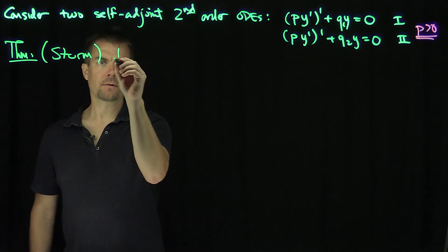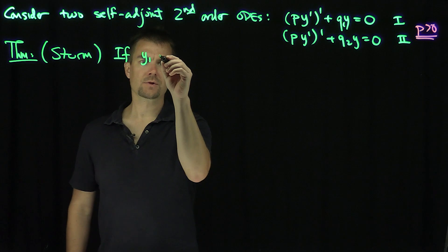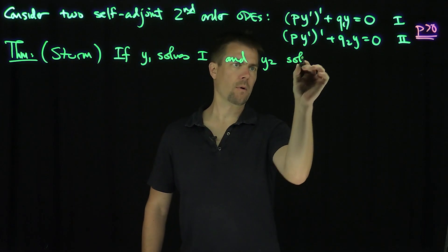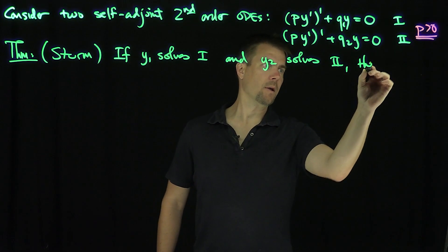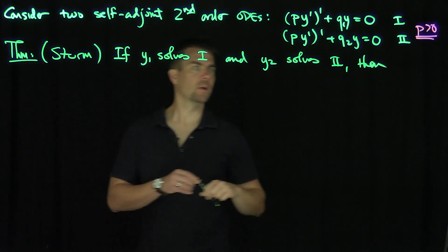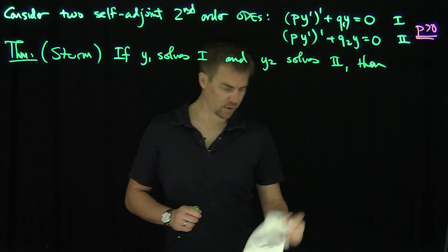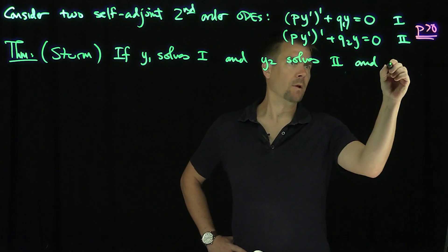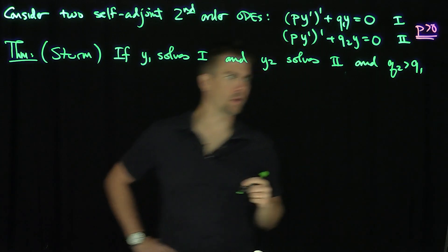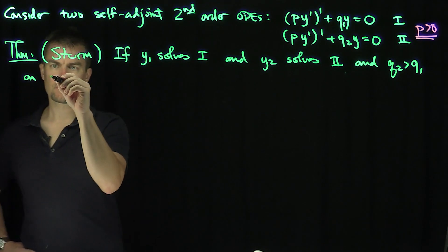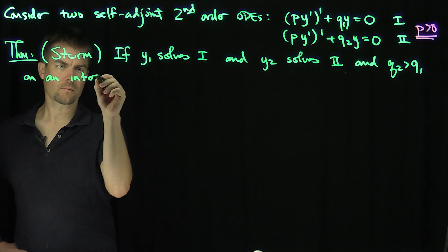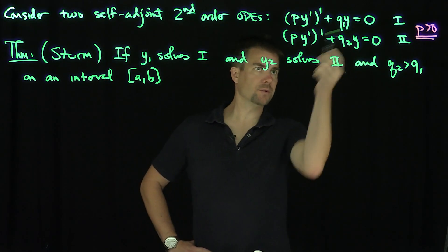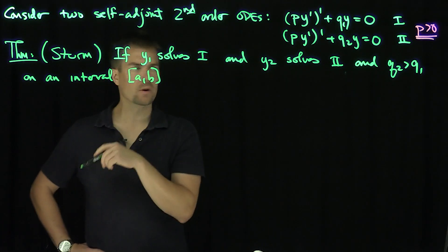The theorem states that if y1 solves equation 1 and y2 solves equation 2, and Q2 is strictly greater than Q1 on an interval [a, b], and y1 and y2 solve their respective equations everywhere, then we focus on the interval [a, b].